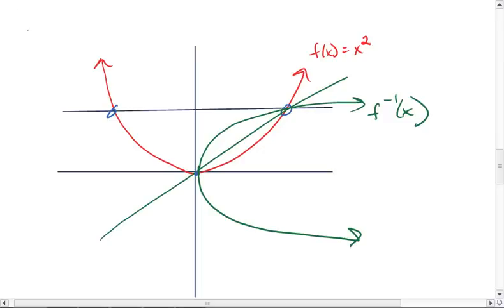So that is the horizontal line test, which is essentially a vertical line test for the inverse function.